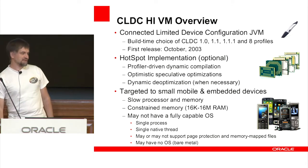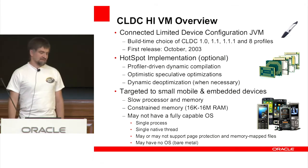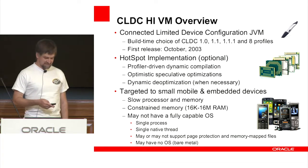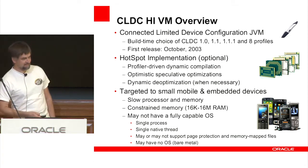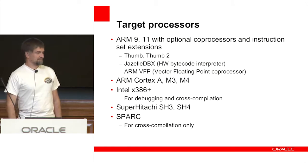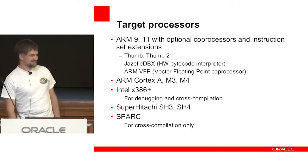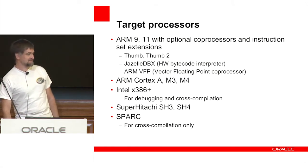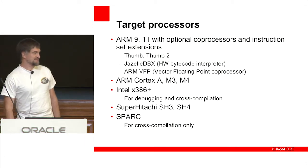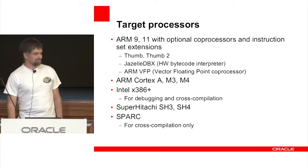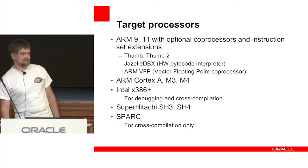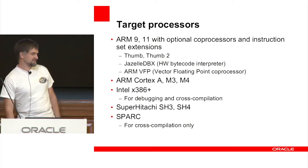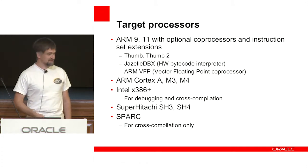There may or may not be page protection and memory-mapped files. There may be no OS at all — it can be bare metal. Target processors are various versions of ARM with various coprocessors. We also target Intel mostly for debugging and cross-compilation, and SuperH and SPARC for cross-compilation only.